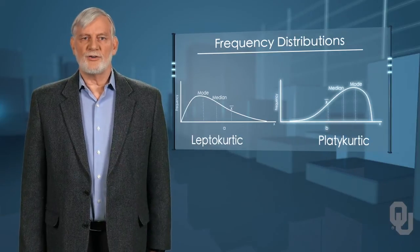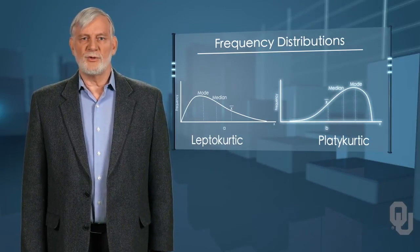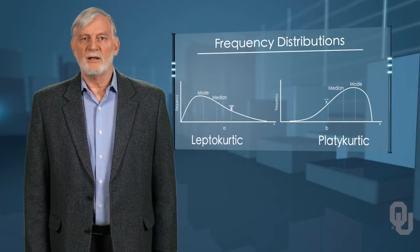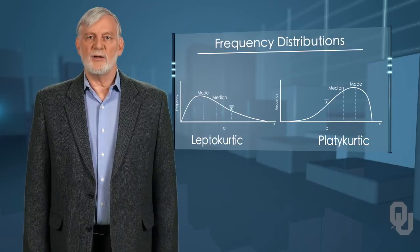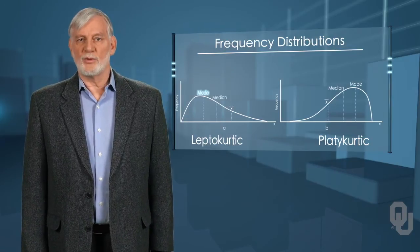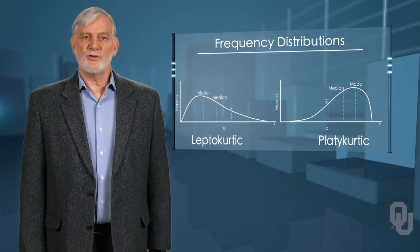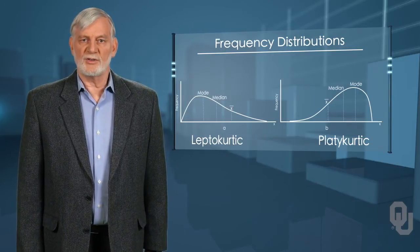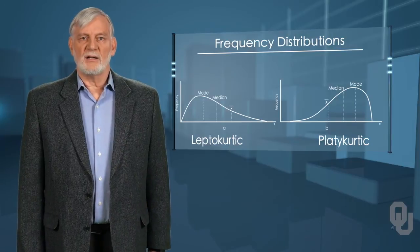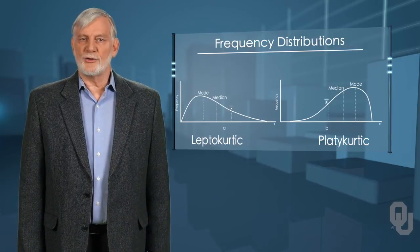Notice that for a skewed right distribution, the mean, X-bar, is higher than the median, which is higher than the mode. For a skewed left distribution, like figure B, the order is reversed.